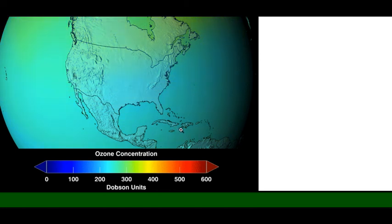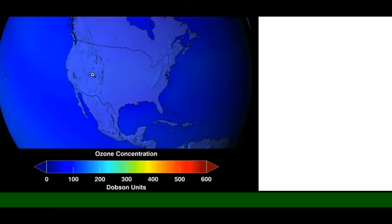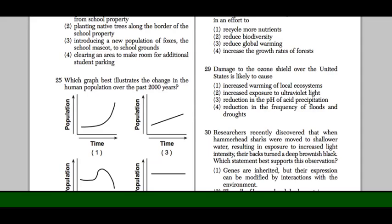We're in the middle of trying to stop that right now, and that's one of the reasons that you're learning about this. 2060 - it's all gone. So the correct answer to 29 is increased exposure to ultraviolet light.